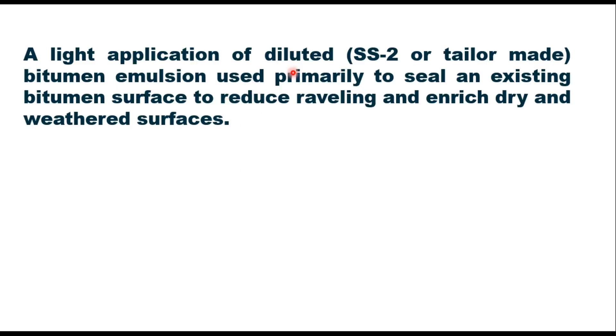Today we shall discuss fog seal, a cold mix work as suggested in IRC SP100. In this session, I shall tell you what fog seal is, why it is used, what are the applications and limitations of fog seal. Fog seal is a light application of diluted bitumen emulsion used primarily to seal an existing bitumen surface to reduce raveling and enrich dry and weathered surfaces.